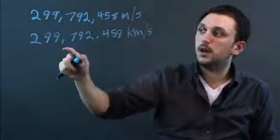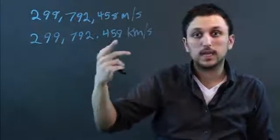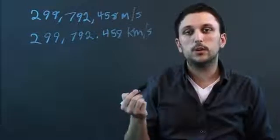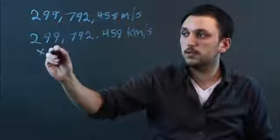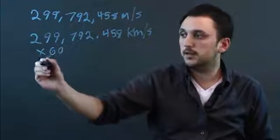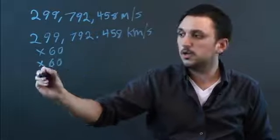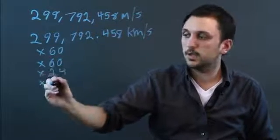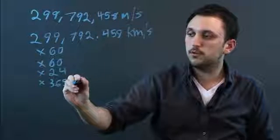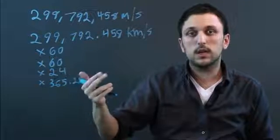Now, if we wanted to figure out a light year from this, we would just multiply the seconds. So, it would be this times 60 would give us a minute, and then times 60 again would give us an hour, times 24 would give us a day, and times 365.25 would give us a light year,